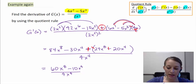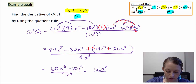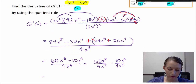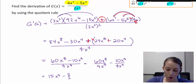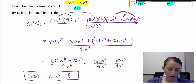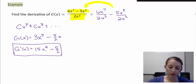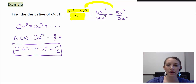I'll put each numerator term over the denominator to simplify. 60 divided by 4 gives 15, and x to the eighth over x to the fourth leaves x to the fourth. Then 10 divided by 4 reduces to 5 halves, and all the x's cancel out. So my most simplified derivative, g prime of x, equals 15x to the fourth minus 5 halves — the exact same answer we got before when we manipulated the expression prior to differentiating.